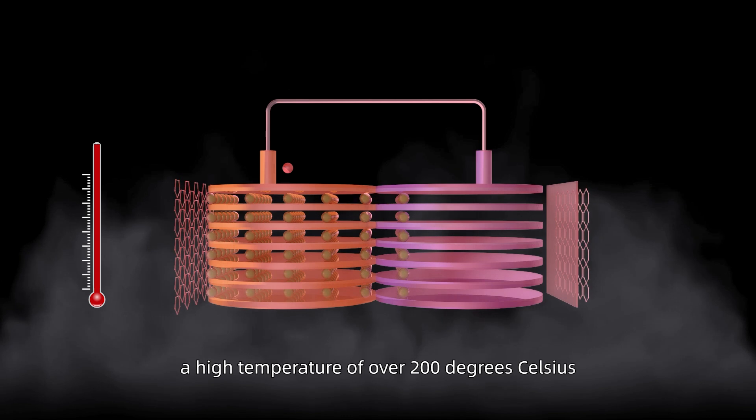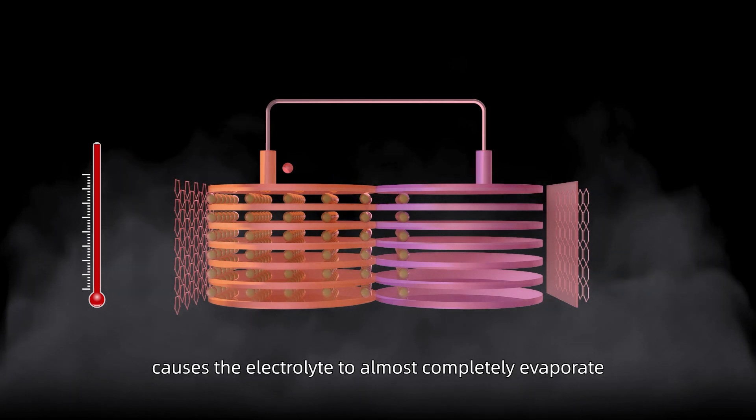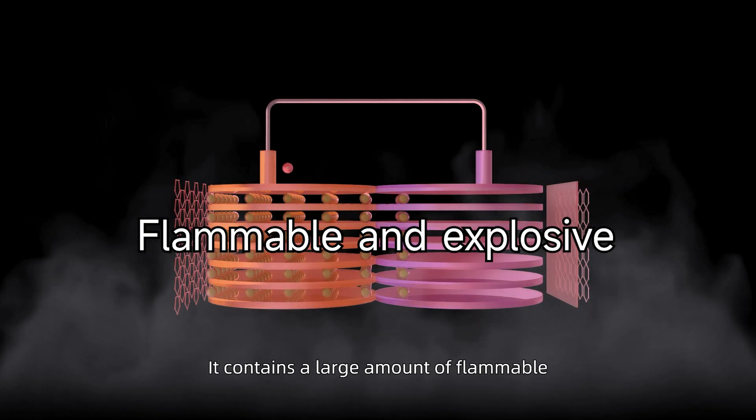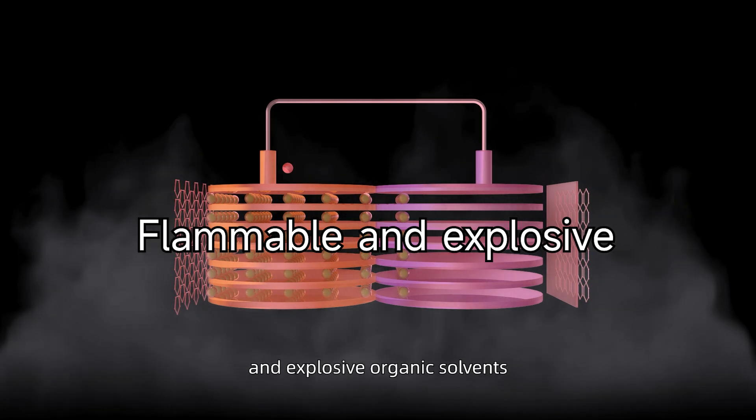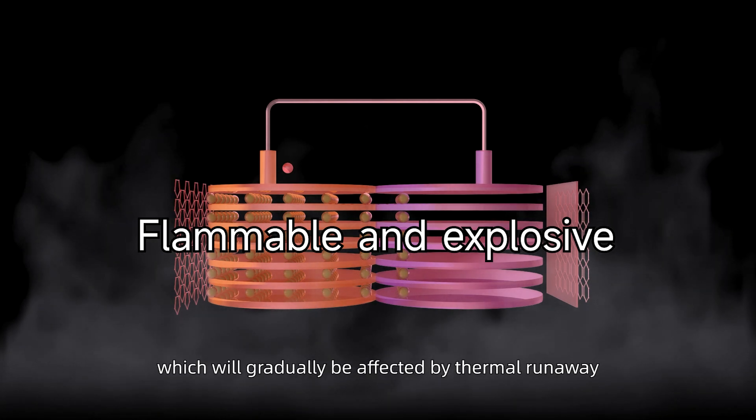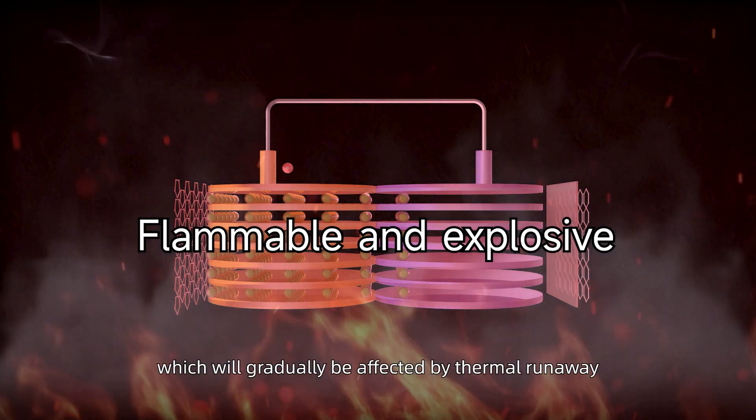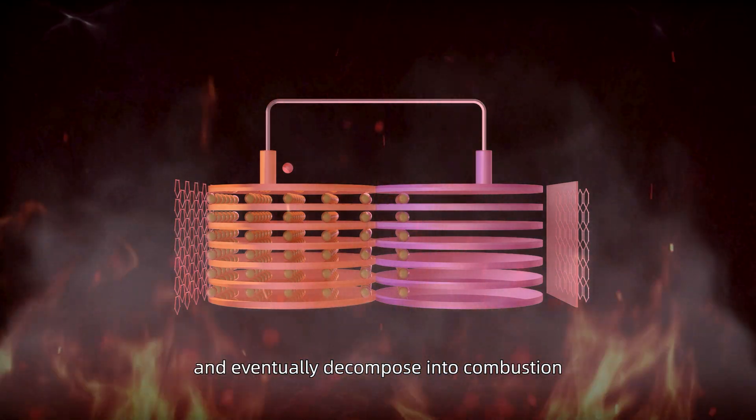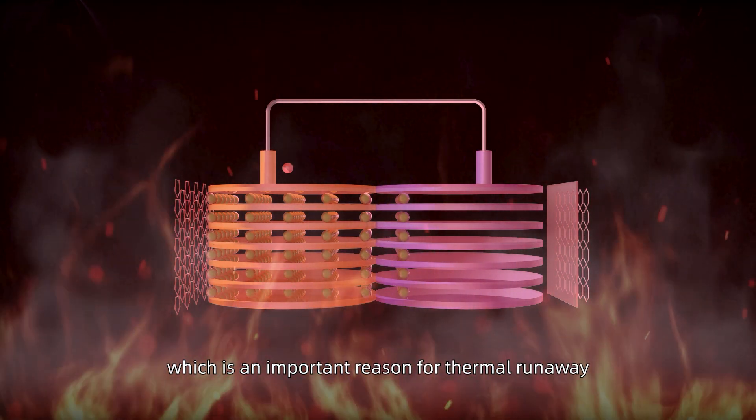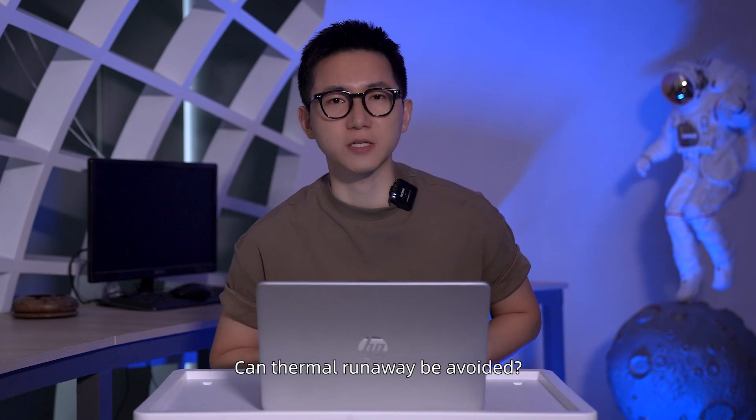When the heat loses control, a high temperature of over 200 degrees Celsius causes the electrolyte to mostly completely evaporate and decompose. It contains a large amount of flammable and explosive organic solvents, which gradually decompose into combustion, which is an important reason for thermal runaway. Can thermal runaway be avoided?